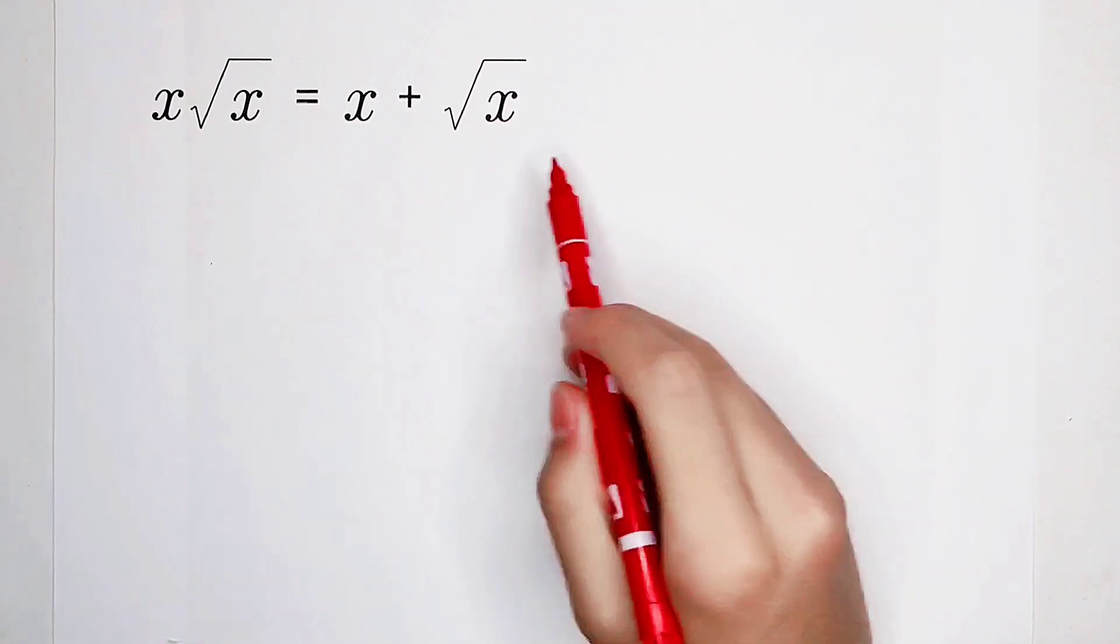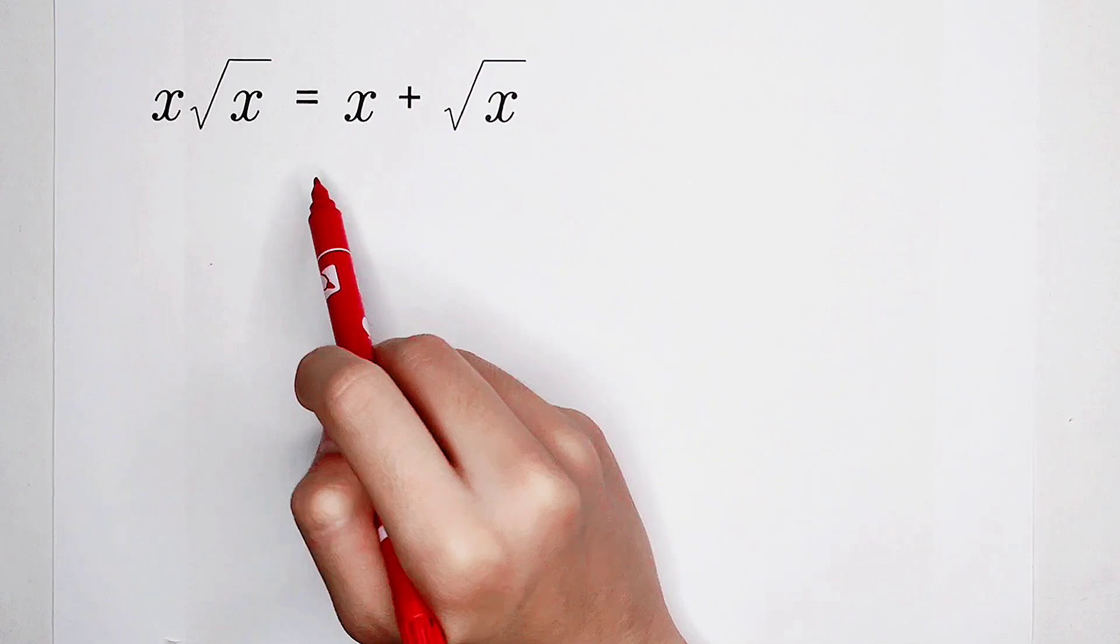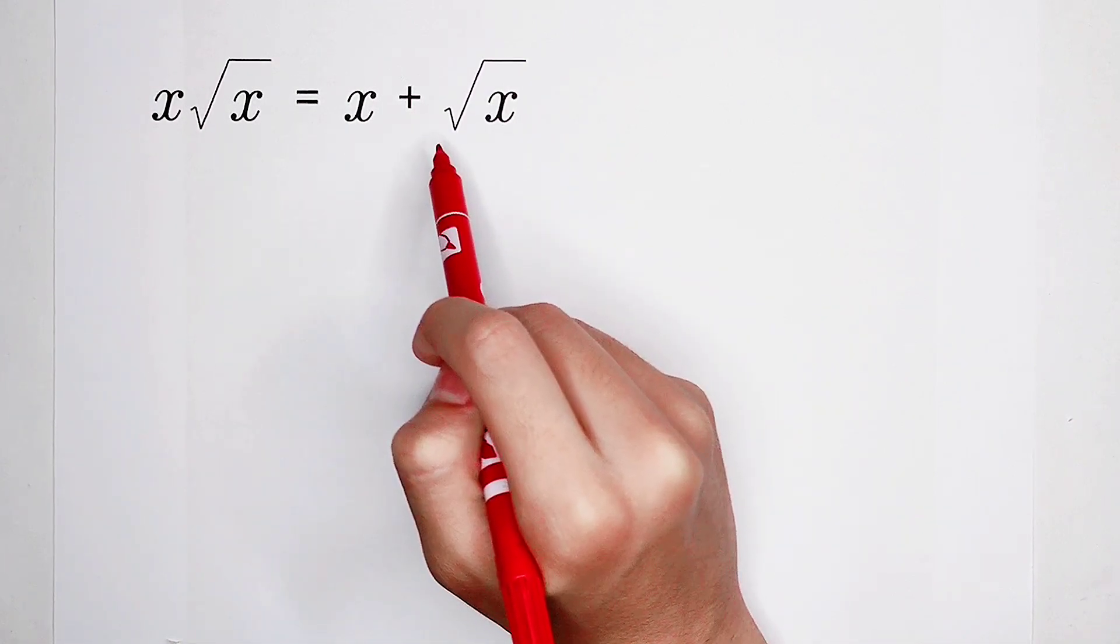Welcome back to Math Window. Start this equation about x. x times square root of x is equal to x plus square root of x.